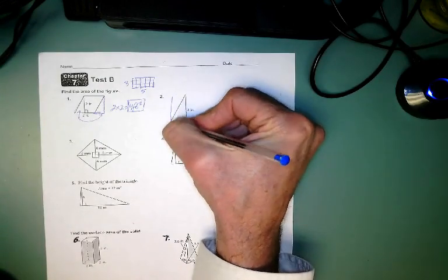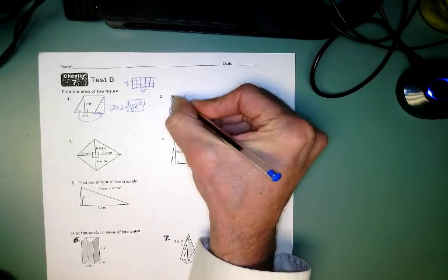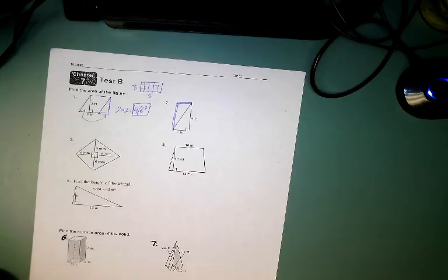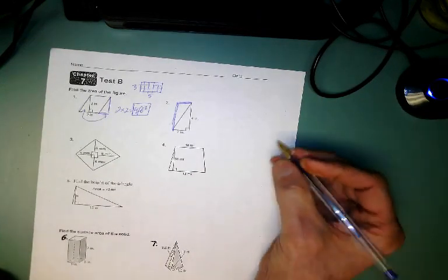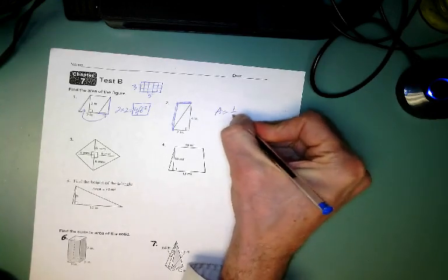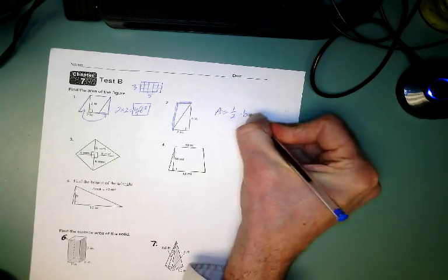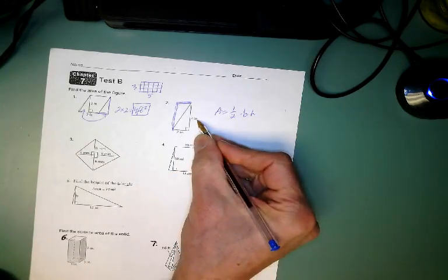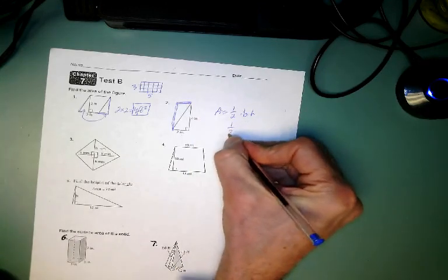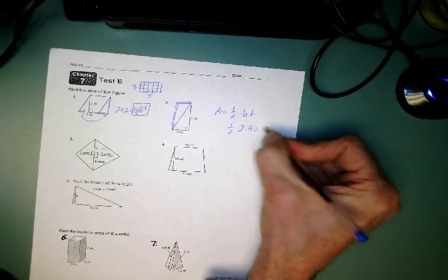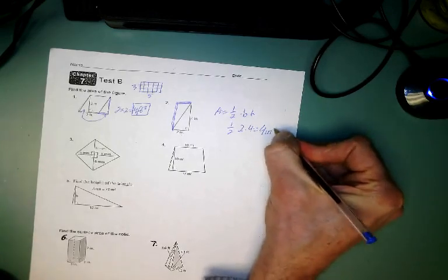Now, you can see that this triangle is half of a rectangle. If I got the area of that rectangle, I would do 4 inches times 2 inches, 8 square inches. Well, the formula for the area of the triangle is half of what they call the base times the height. How wide is it at the bottom? 2. How tall is it? 4. 1 half times 2 times 4 is half of 8, which is 4.